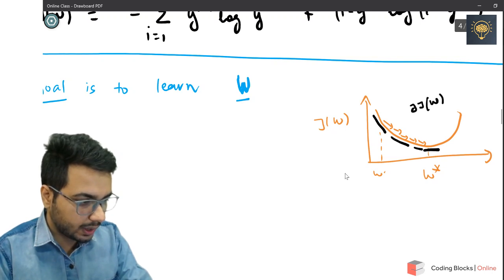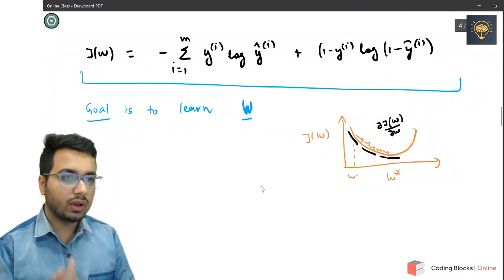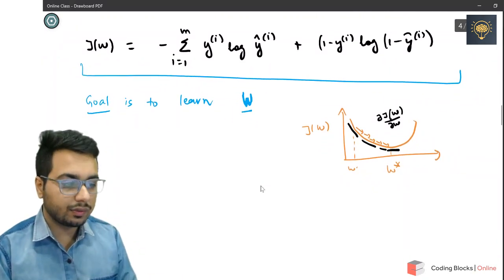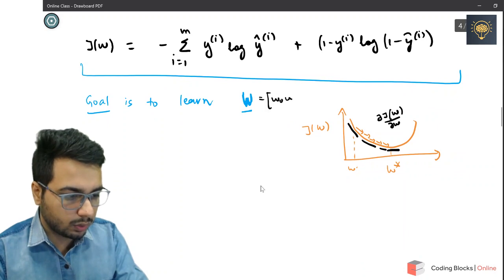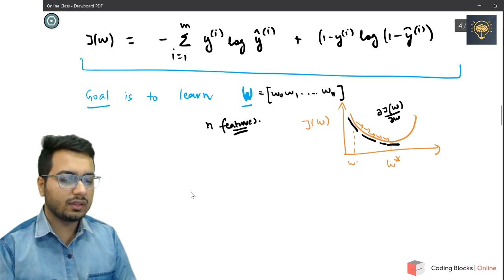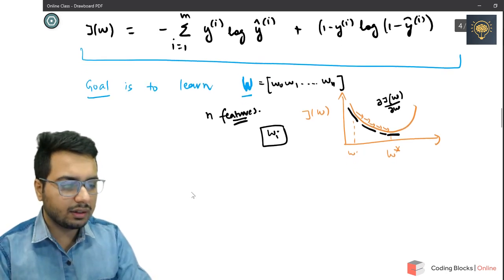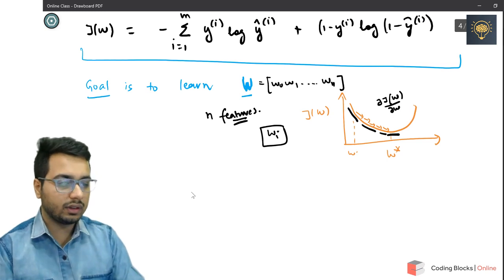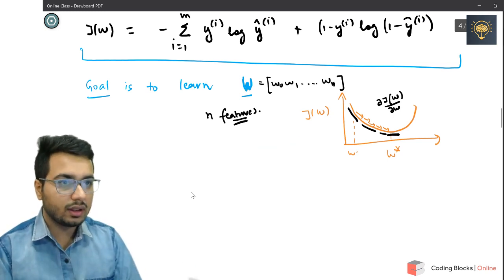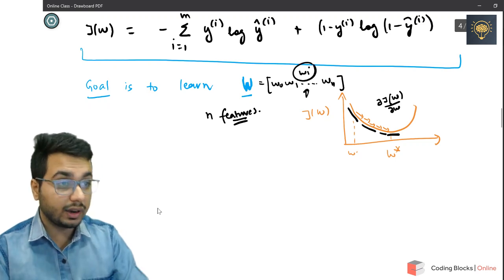This can be written as ∂J(w)/∂w. Now w is not just one parameter — it is a vector of many parameters. You have w_0, w_1, up to w_n, where n is the number of features in a given example. I'm going to derive the update for a given w_i, for any particular w_i, and you can generalize it for all parameters.